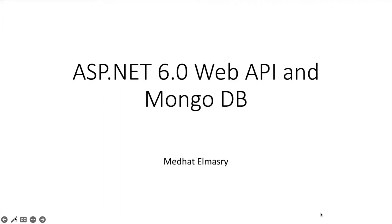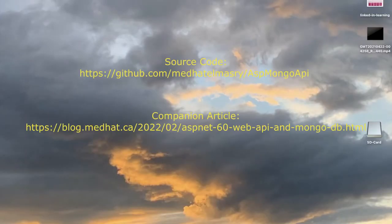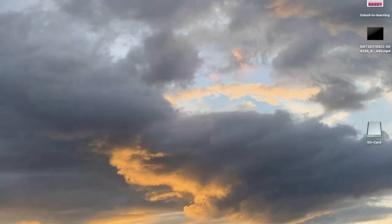Hi, my name is Mithat Elmasri and today I'll show you how you can use MongoDB with an ASP.NET Web API application. In this tutorial, I will be using Docker for the database, running a MongoDB container in Docker, and for .NET I will be using version 6.0. The editor I will be using is Visual Studio Code. So let's get started.